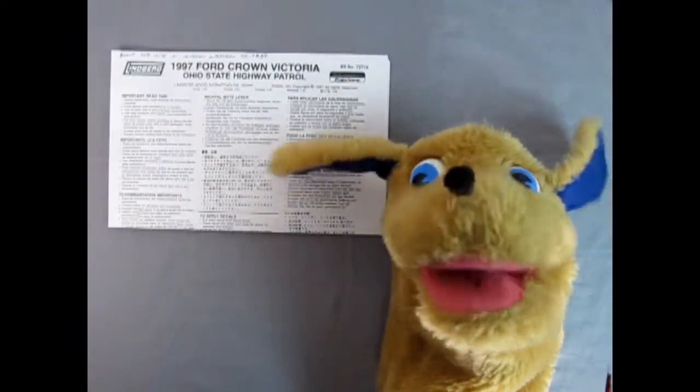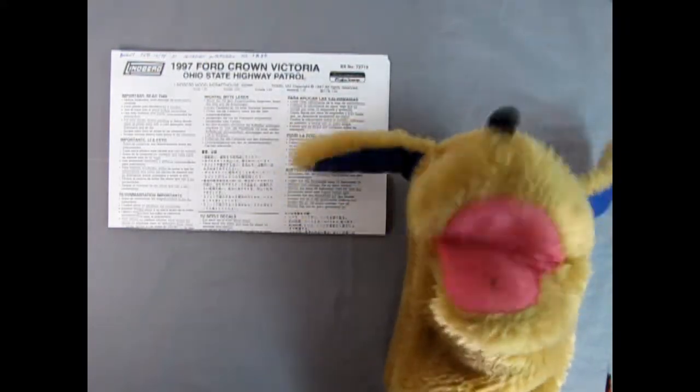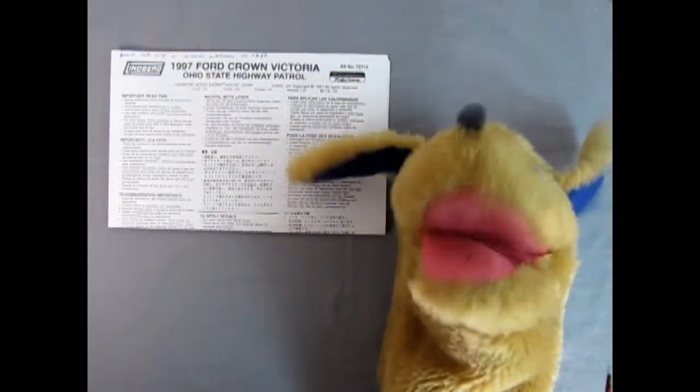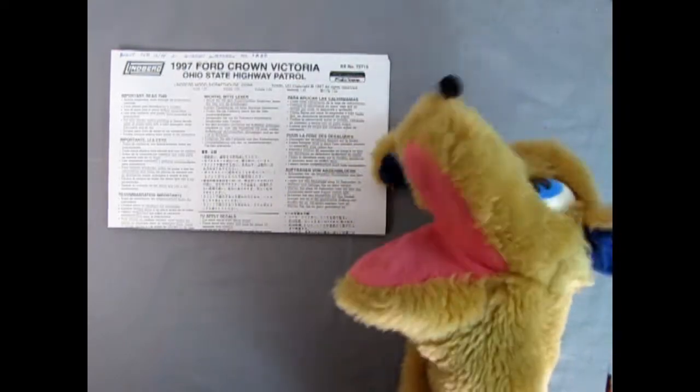Breaker 1-9, this is Danny the dog from the K9 unit and today we're looking at the 1997 Ford Crown Victoria Ohio State Patrol instruction sheet. That was a mouthful. So here it is, let's take a look.